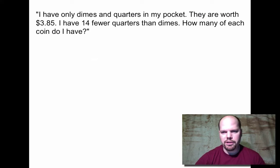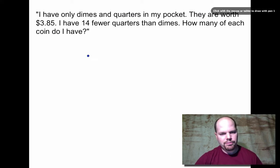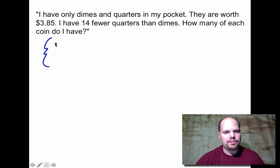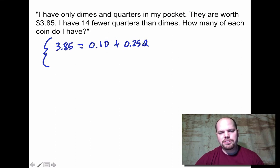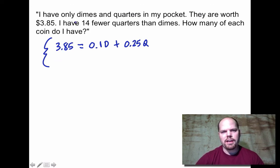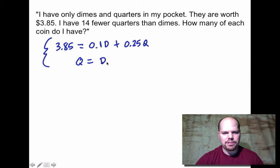Word problem: someone has only dimes and quarters worth $3.85, and 14 fewer quarters than dimes. We set up a system of equations. Let d = number of dimes and q = number of quarters. The value equation is: 0.10d + 0.25q = 3.85. Since there are 14 fewer quarters than dimes: q = d - 14.